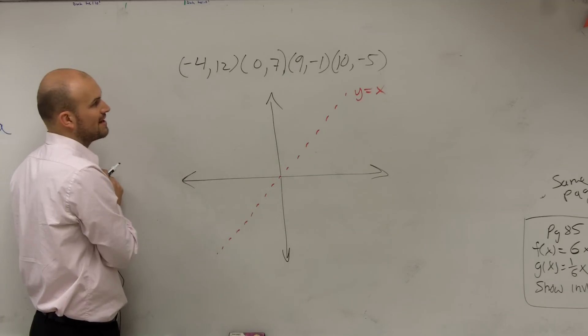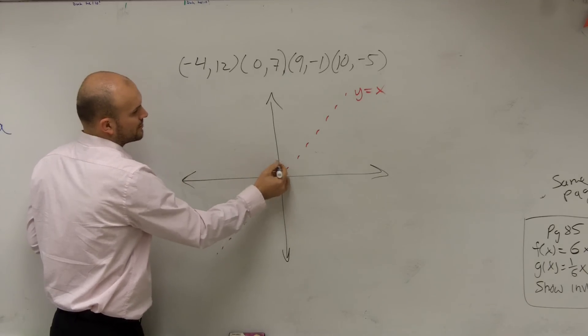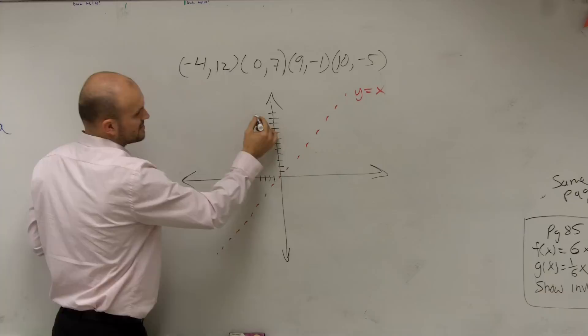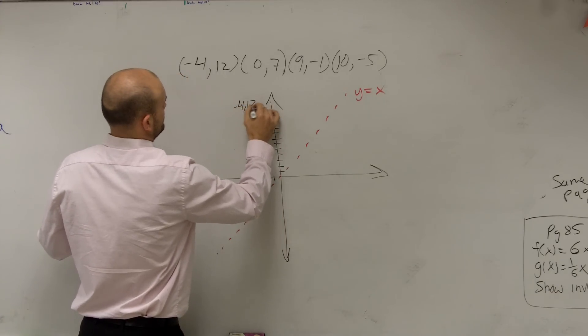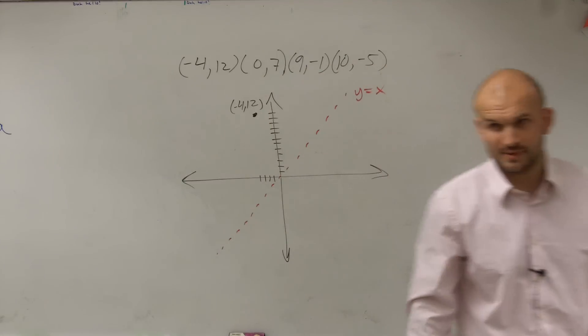So what if I asked you to graph (-4, 12)? Negative 1, 2, 3, 4, up 12. 1, 2, 3, 4, 5, 6, 7, 8, 9, 10, 11, 12. So that point's going to be somewhere right there, right? Everybody agree with me, that's (-4, 12)?